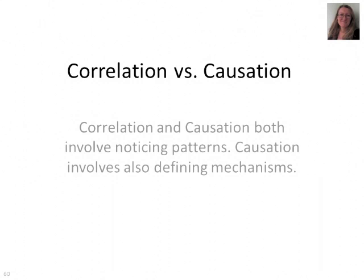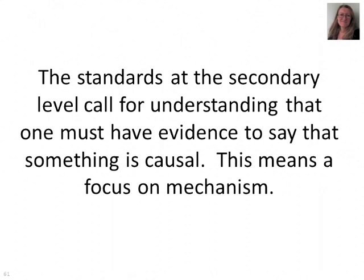For most people, the first one makes sense — they can see where ice cream consumption could be a mechanism for obesity. The second one sends them on a search for a mechanism. In that case, it may be just a correlation, and the second one involves realizing that there may be a third variable — hot weather — involved. So the standards are asking you to think about evidence that something is causal, which means focusing on mechanism.